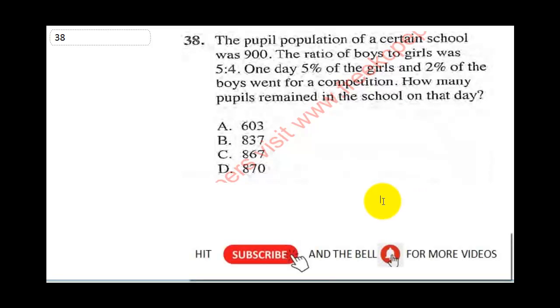Question 38 says the pupil population of a certain school was 900. The ratio of boys to girls was 5 to 4. One day, 5% of the girls and 2% of the boys went for a competition. How many pupils remained in the school on that day?